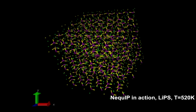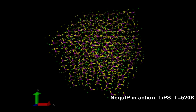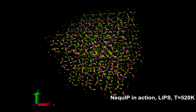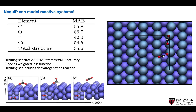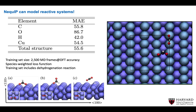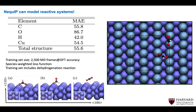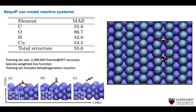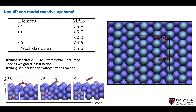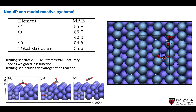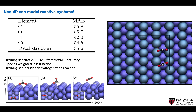A simulation of NEQUIP in action shows the LIPS system at 520 K, with phosphorus and sulfur atoms in yellow and purple and lithium atoms in red. We also demonstrate that NEQUIP can model reactive systems: specifically a formate molecule on a copper surface, where the training set includes the dehydrogenation reaction of the formate molecule. The table shows element-wise mean absolute errors for the four species, alongside an example of the dynamics.